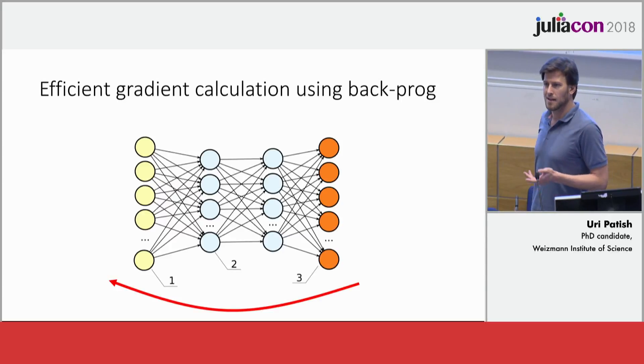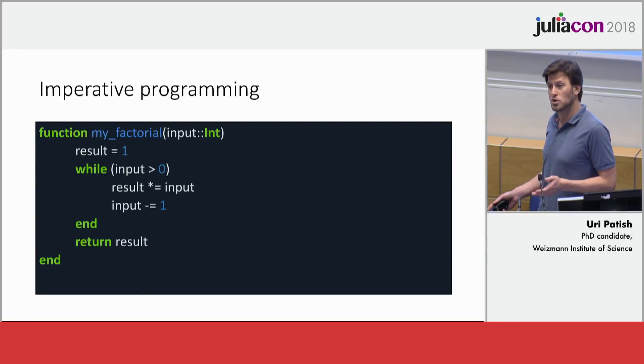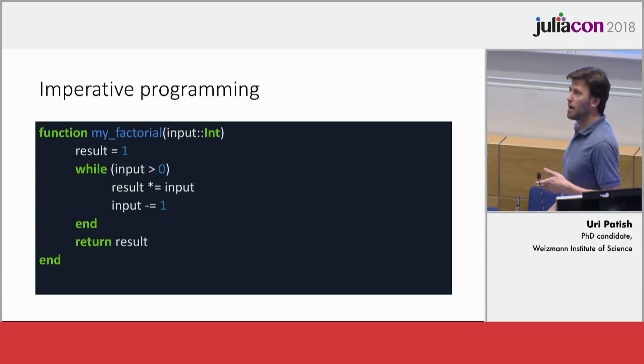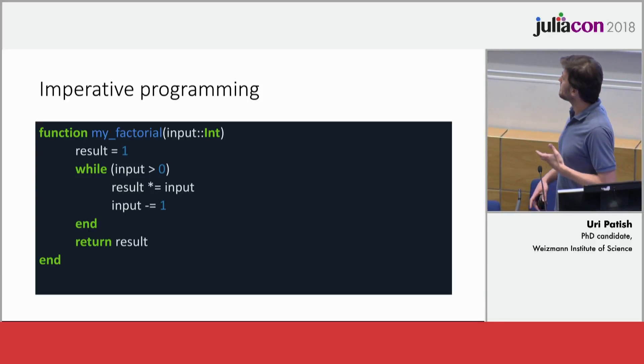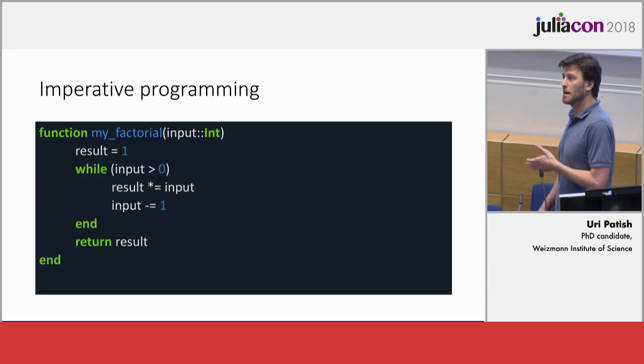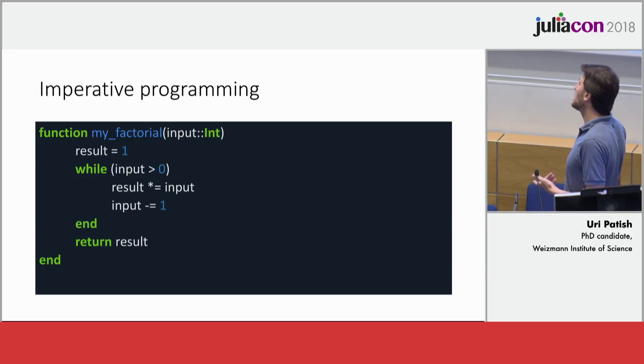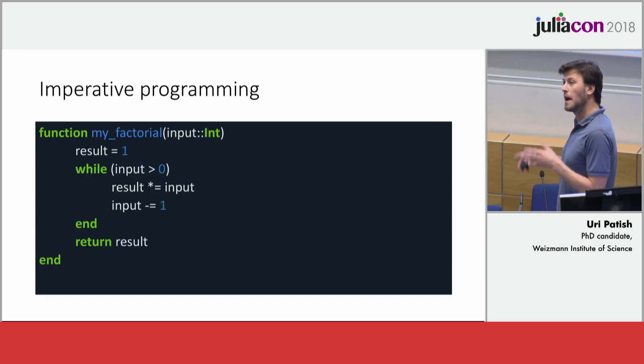While there are tasks where you just want to learn from data, there are other tasks where you just want to express some logic using an imperative programming language such as Julia. For example, if you want to implement the factorial function, you might use this small code snippet that uses variables and while loops, and that's going to allow you to describe this logic in a succinct fashion. An interesting question that comes up is whether we can take the logic of imperative programming and combine that with the adaptivity of machine learning.